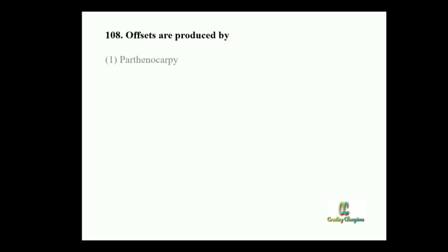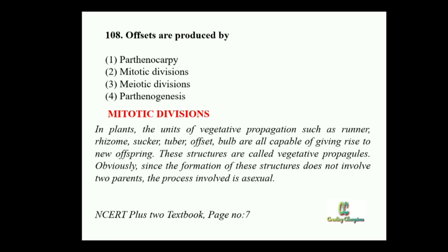Next question: Offsets are produced by? Option 1: Parthenocarpy. Option 2: Mitotic division. Option 3: Meiotic division. Option 4: Parthenogenesis. Offset is a vegetative propagule, so the answer is mitotic division, because the process involved is asexual and asexual reproduction takes place by mitotic division. Parthenocarpy is a fruit formed without fertilization, giving seedless fruit. Meiotic division does not occur in somatic cells. Parthenogenesis is the formation of an embryo from an ovum or egg without fertilization.